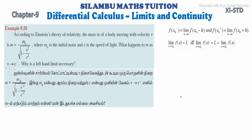Hi student, this is Salambo-Max tuition 11th standard example 9.26. According to Einstein's theory of relativity, the mass m of a body moving with velocity v is m = m0 divided by square root of 1 minus v squared divided by c squared, where m0 is the initial mass and c is the speed of light. What happens to m as v tends to c minus, and why is the left-hand limit necessary?